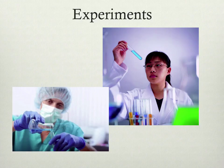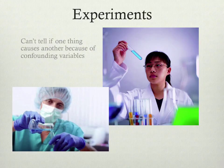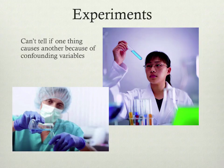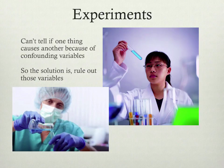Just to make sure it's clear: the problem is that you can't tell if one thing causes another, and the reason you can't tell this is because of potential confounding variables — these other things that could be influencing the data that you just don't know about. So the solution is, if possible, to rule out those variables so that nothing else is having an influence on the variables that you're looking at.